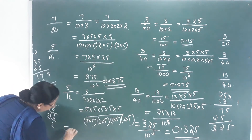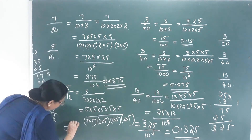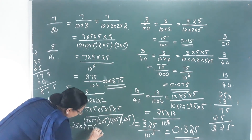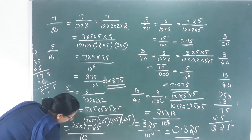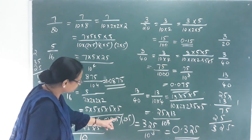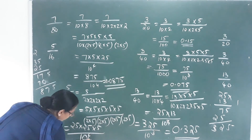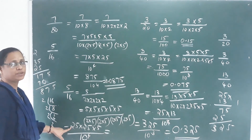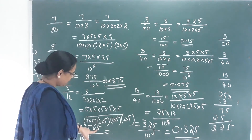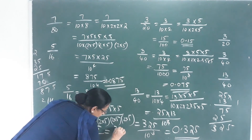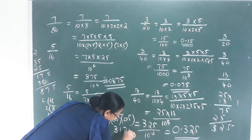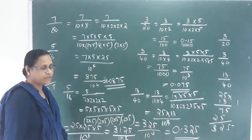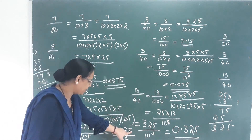5 into 5 gives 25, 25 into 5 gives 125. Then 10 raise to 1, 2, 3, 4 zeros. 25 into 25 gives 625, and 625 into 5 gives 3125. So 3125 divided by 10 raise to 4.